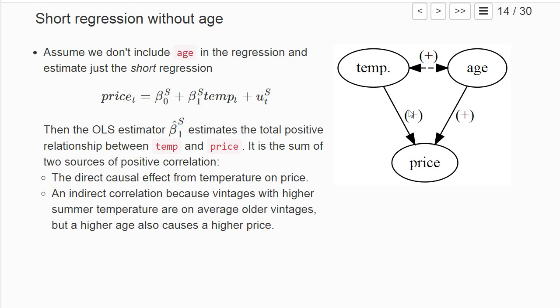This means we systematically find a more positive estimate β₁ˢ than the direct causal effect from temperature on price. In other words, if you're interested in this causal effect only—this direct effect from temperature on price—we have a positive bias; our estimator is systematically too large.